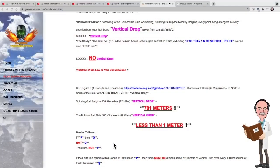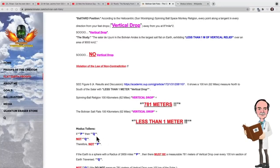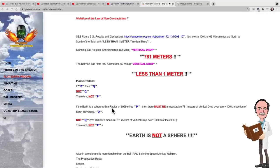And again, he misstates a modus tollens argument. If p, then q, not q, therefore not p. If the earth is a sphere with a radius of 3959, then there must be a measurable 781 meters of vertical drop over every 100 kilometers of earth transverse. Again, that is an incorrect statement. Now, once again, because his argument is incorrect, confirming his misunderstanding of the problem, his conclusion is incorrect.